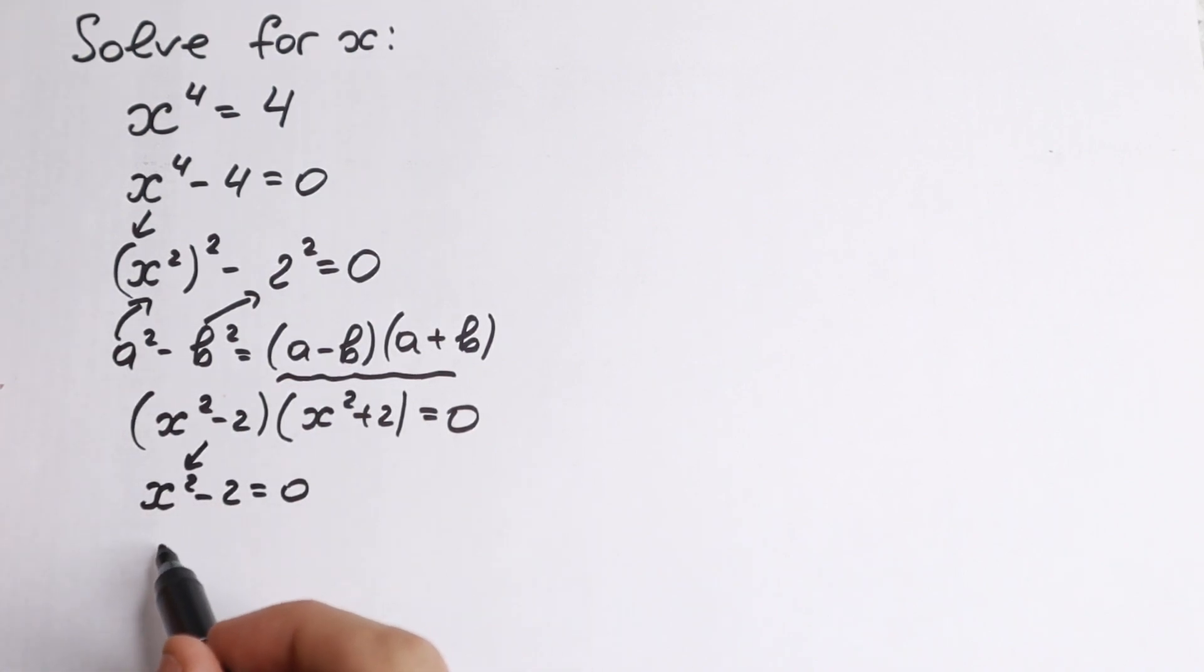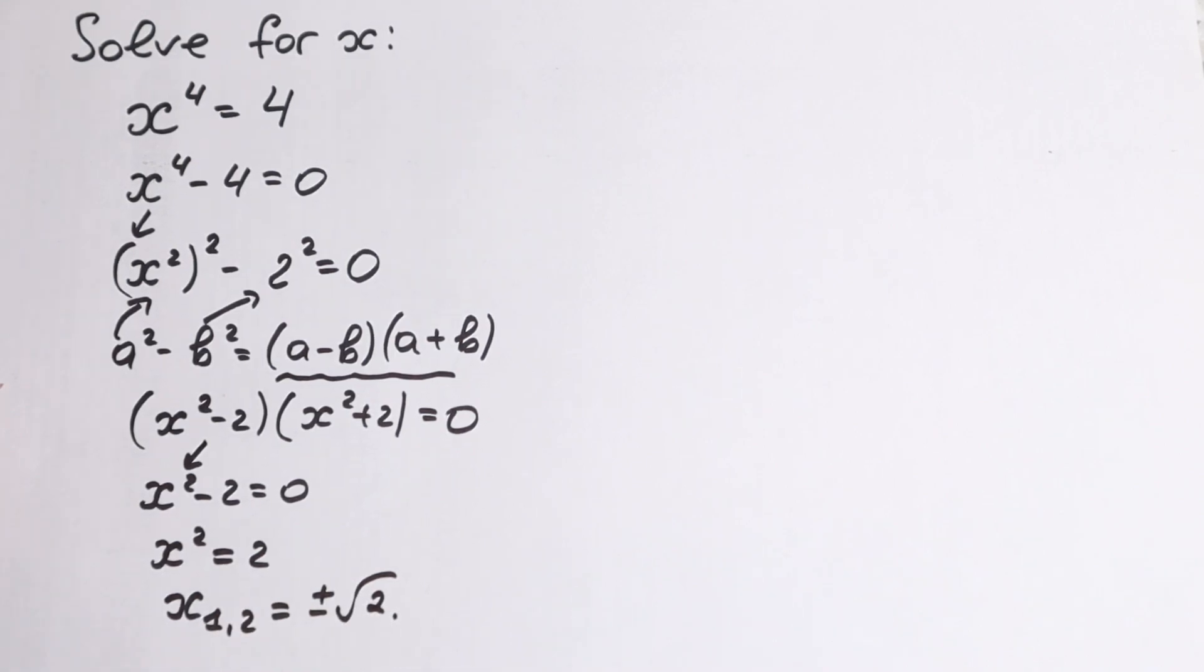From here x squared equal to 2. This is a classic equation, and our root will be x first and x second equal to plus minus square root of 2. So this is our first pair of roots.